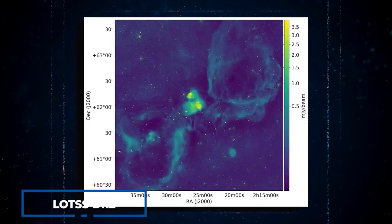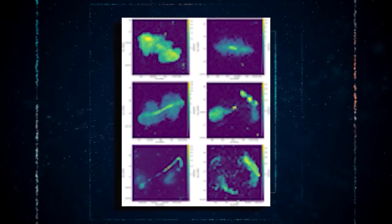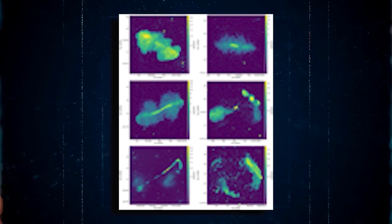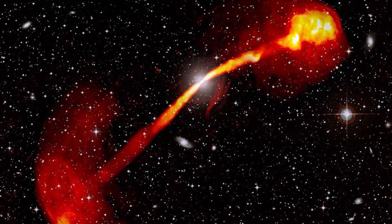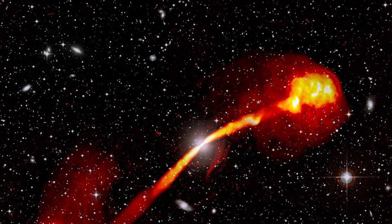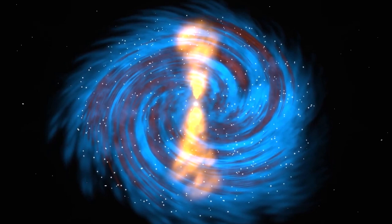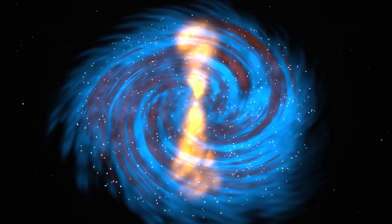The research team refined the LoTSS DR2 data by eliminating compact sources and conducting imaging at resolutions of 60 and 90. The resulting images present an opportunity to delve into a novel sensitivity range for radio galaxy lobes, providing promising data for the quest of uncovering radio galaxies with substantial angular length.